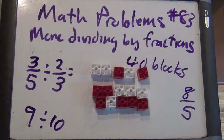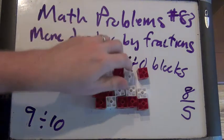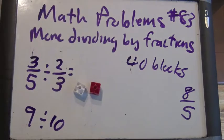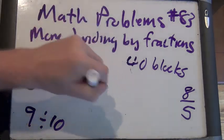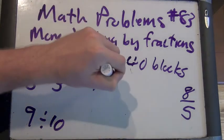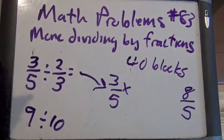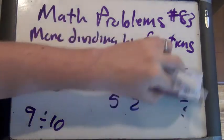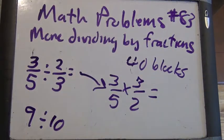So 3 fifths divided by 2 thirds should be what? It should be 9 over 10. Okay. So we found that out with our blocks. Now let's see. Do you want to see if our definition of division helps? Yep. What does our definition of division say this is? It says 3 fifths times 3 halves. Which equals? It's going to equal 9 over 10.